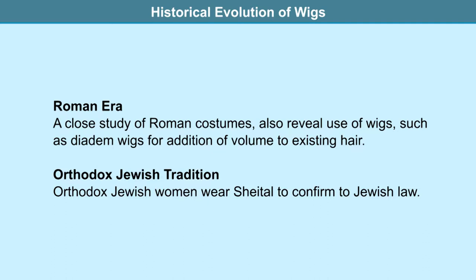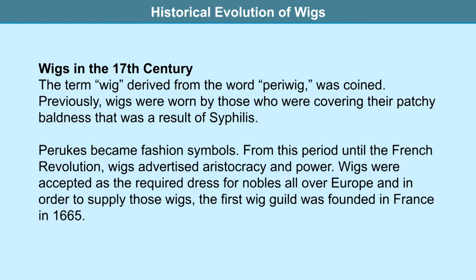Orthodox Jewish women even today wear the scheitel, which is a full wig or a half wig, to conform to Jewish law. These are worn only by married women, as hair is considered to be sexually attractive. Now let us discuss wigs in the 17th and 18th century.